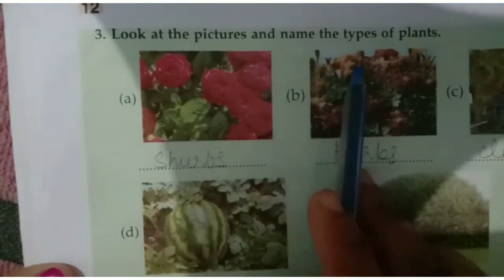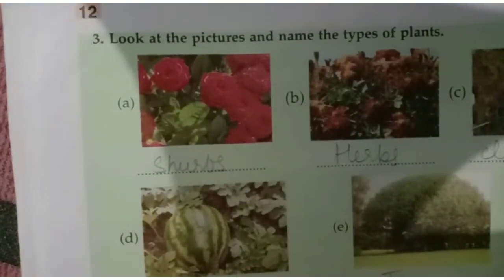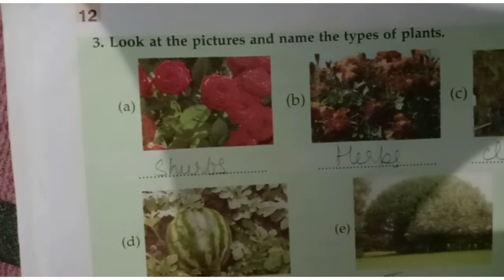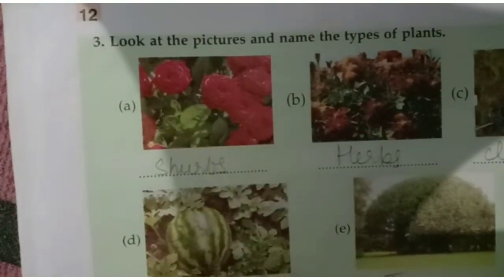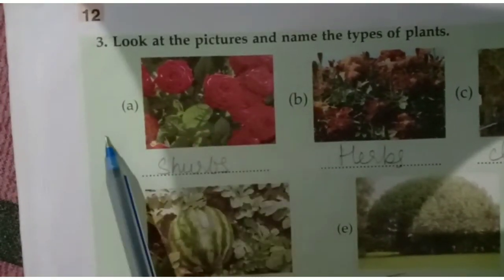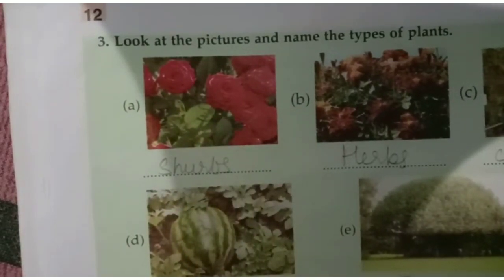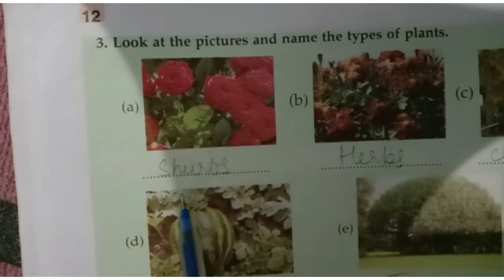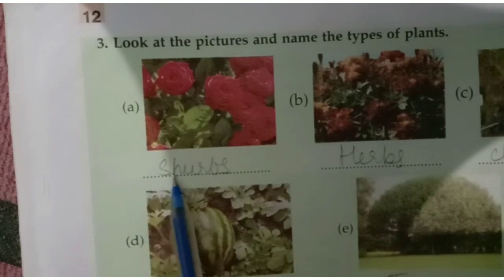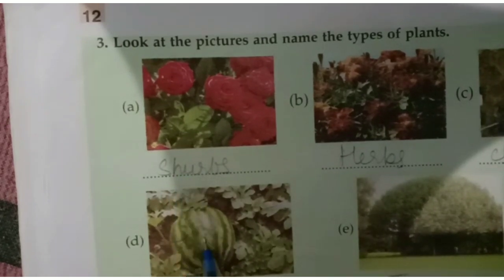Third exercise: look at the pictures and name the types of plant. Picture A is a rose plant. The rose plant is a shrub. Write 'shrubs.'